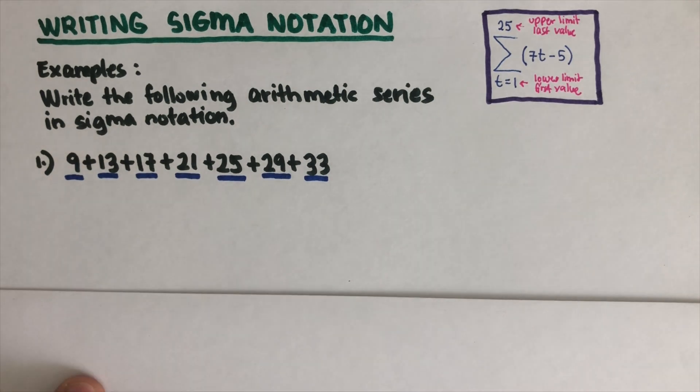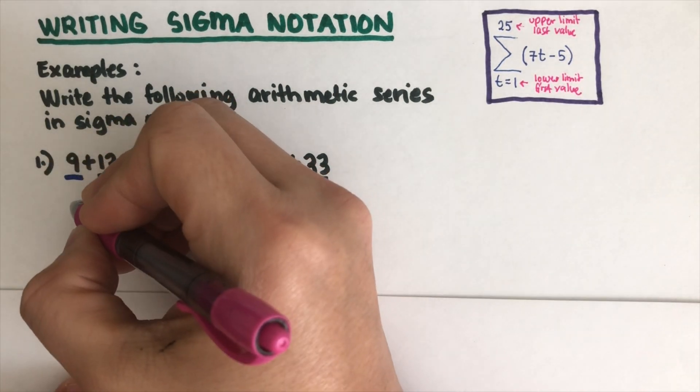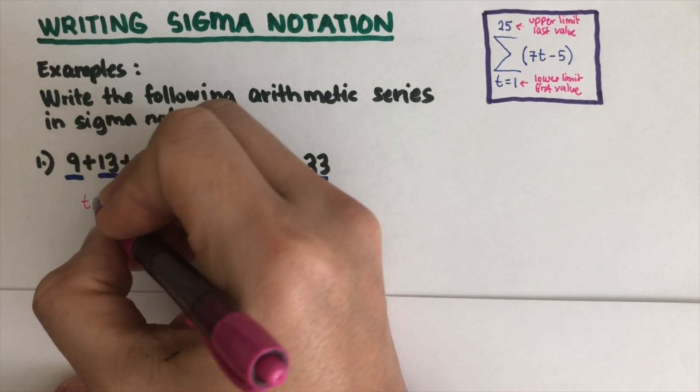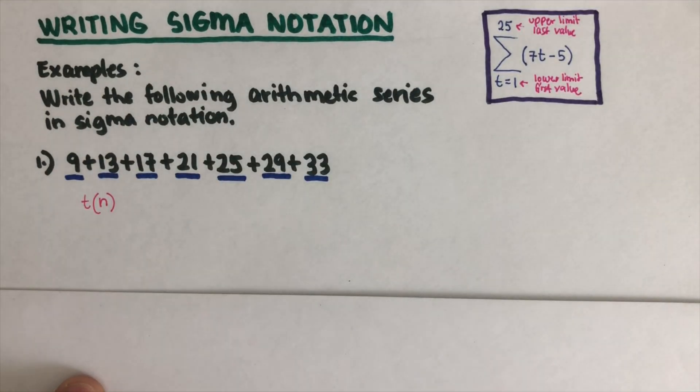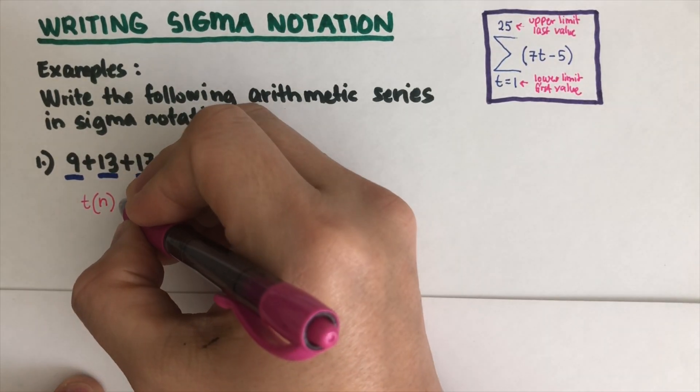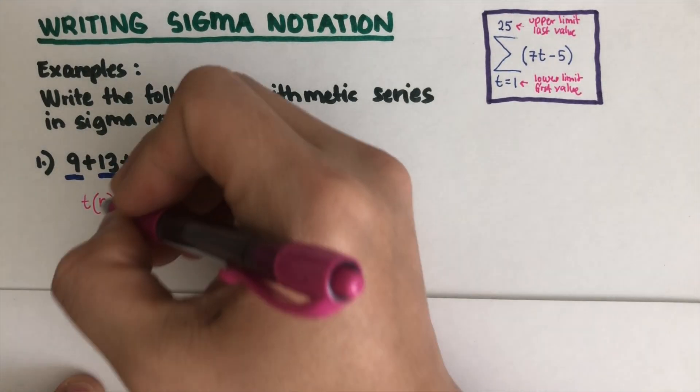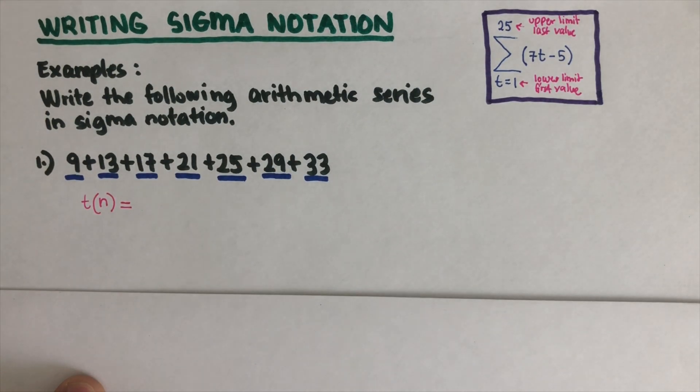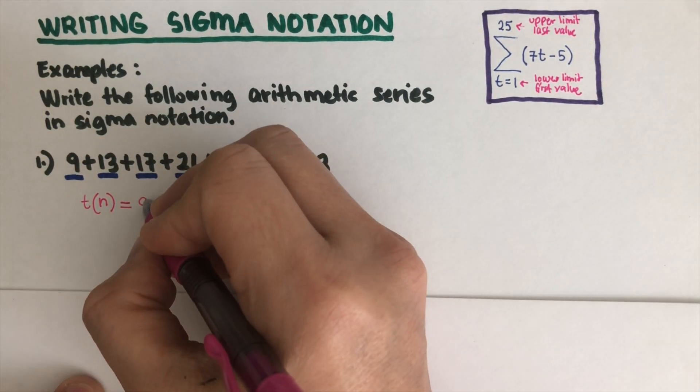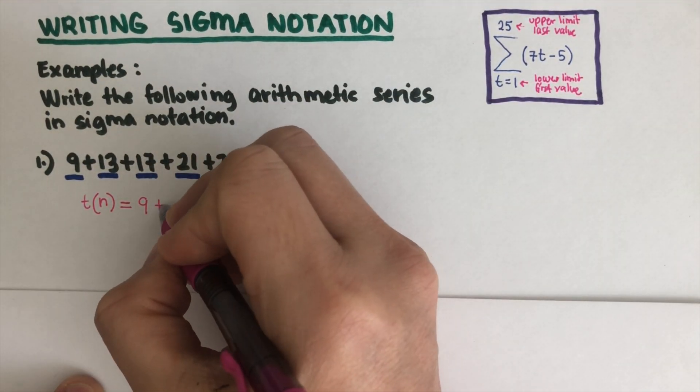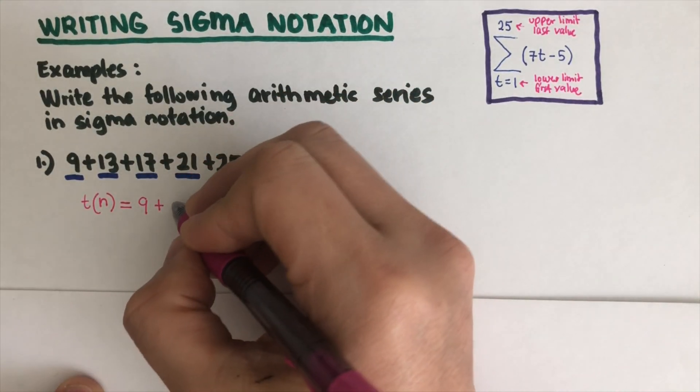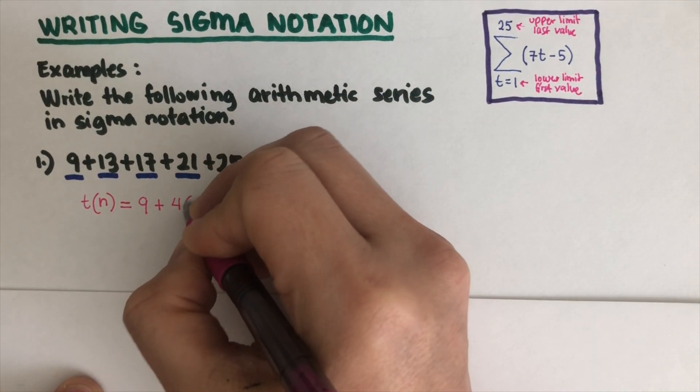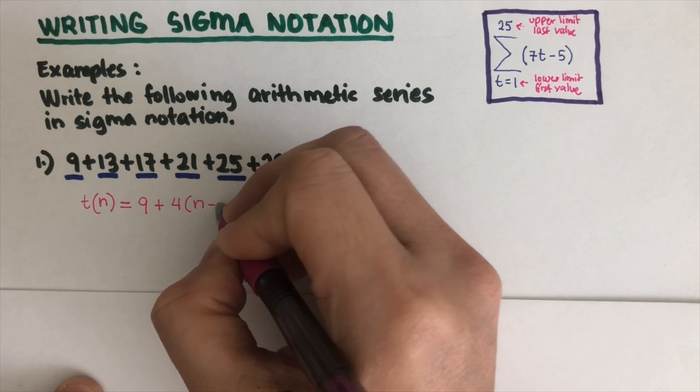There's another video on finding the equation of an arithmetic series. For t(n) here, there are two ways to do this. We can write the first way: the first term which is 9, and then plus the difference. This one is growing by four, so 9 plus 4 parentheses n minus 1.